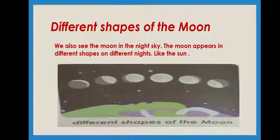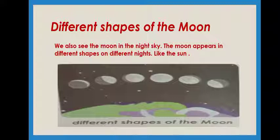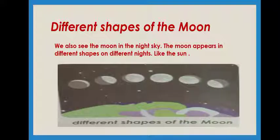Different shapes of the moon. We also see the moon in the night sky. The moon appears in different shapes on different nights. Even we can see the moon in different shapes. When sunset happens, we can see the moon but not clearly. It also depends on how sunlight falls — moon will shine and we can see the moon completely.